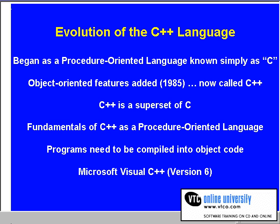C++ is a superset of C, which means that with few exceptions, everything available in C is also available in C++. This means you can use C++ as a procedural as well as object-oriented language.